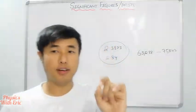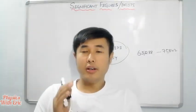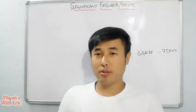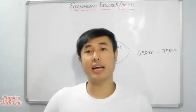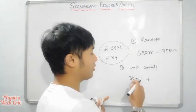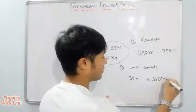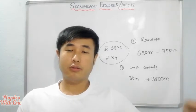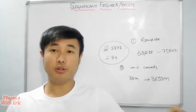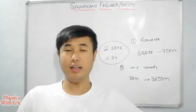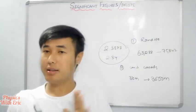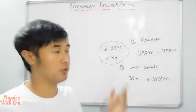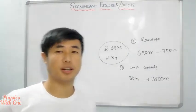Significant figures help us understand the number of units. For example, if I run or walk 3 km, that is exactly 3,000 metres. We need to understand what a significant figure is in such cases.